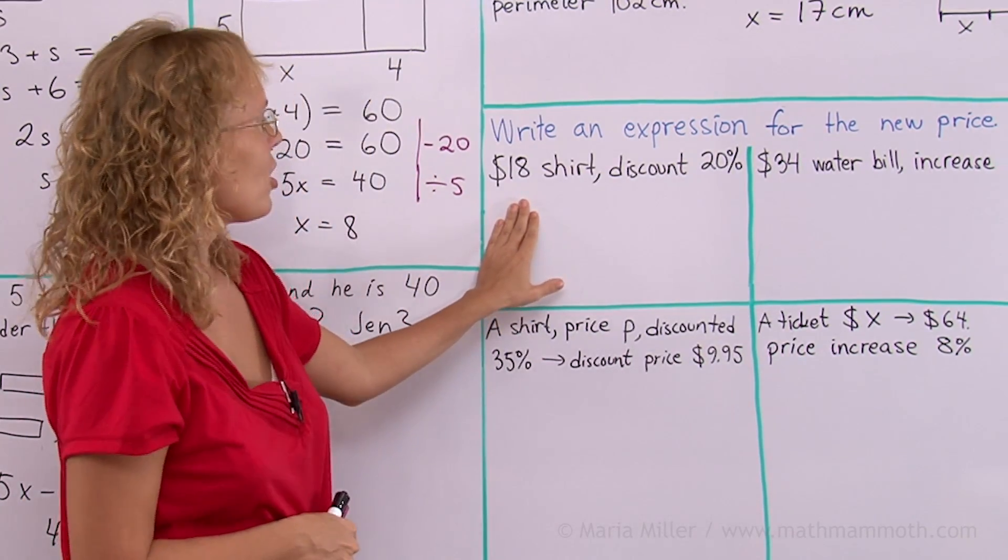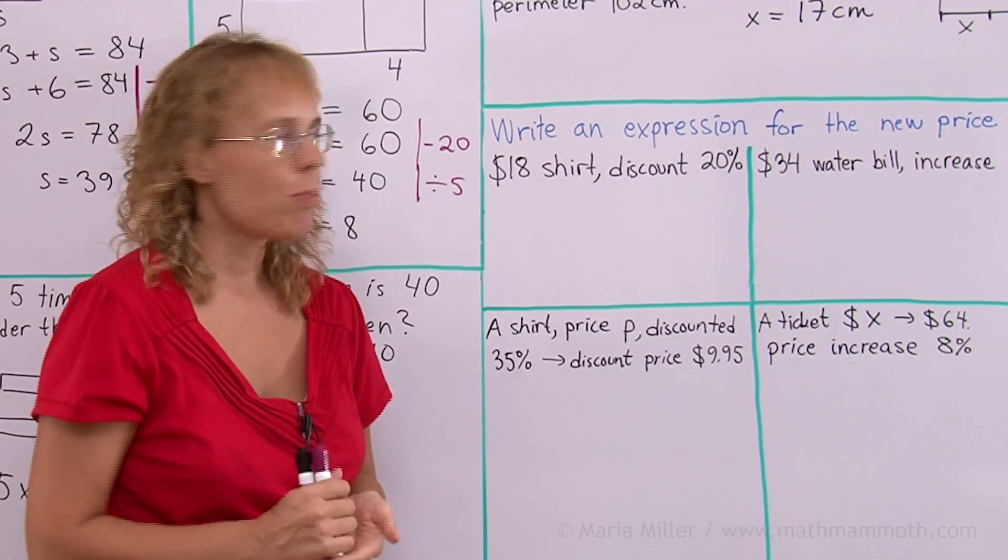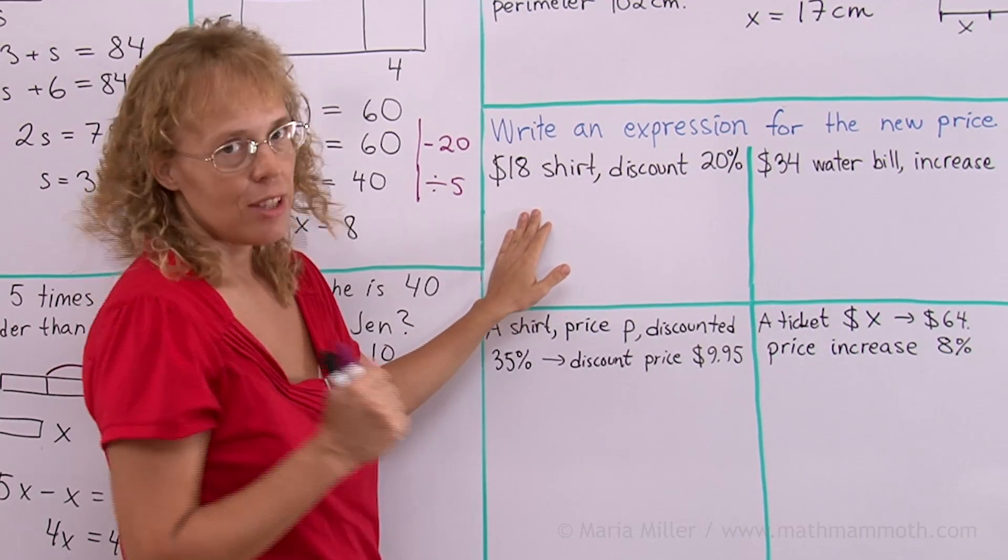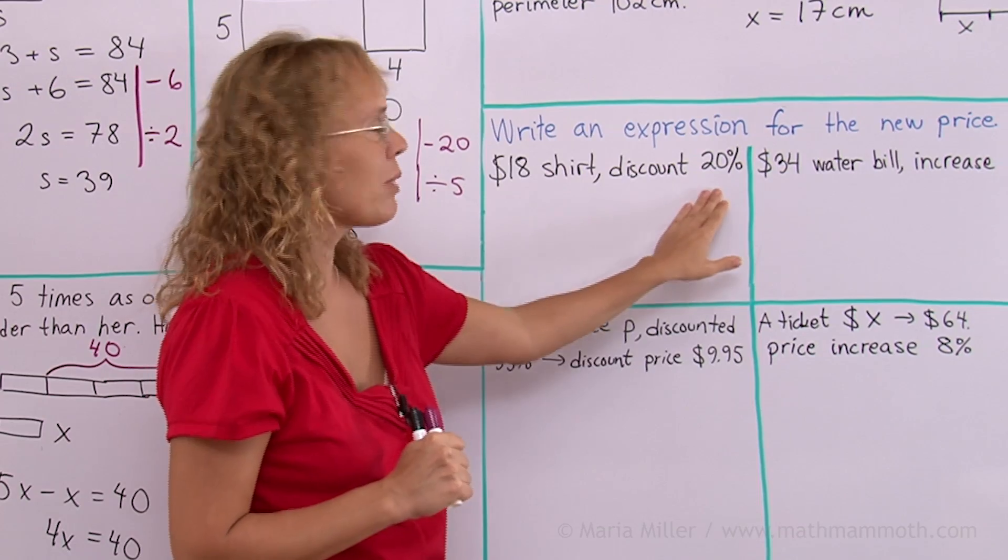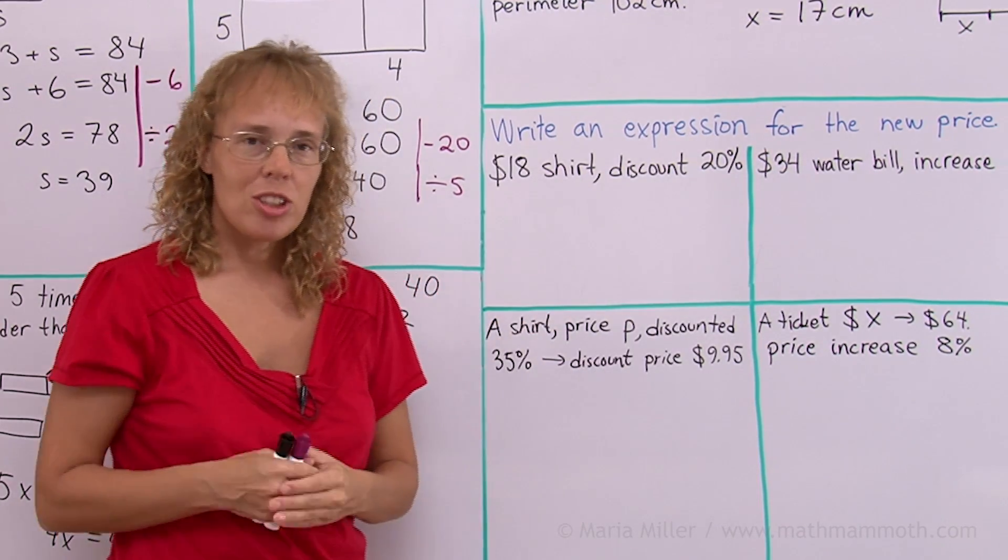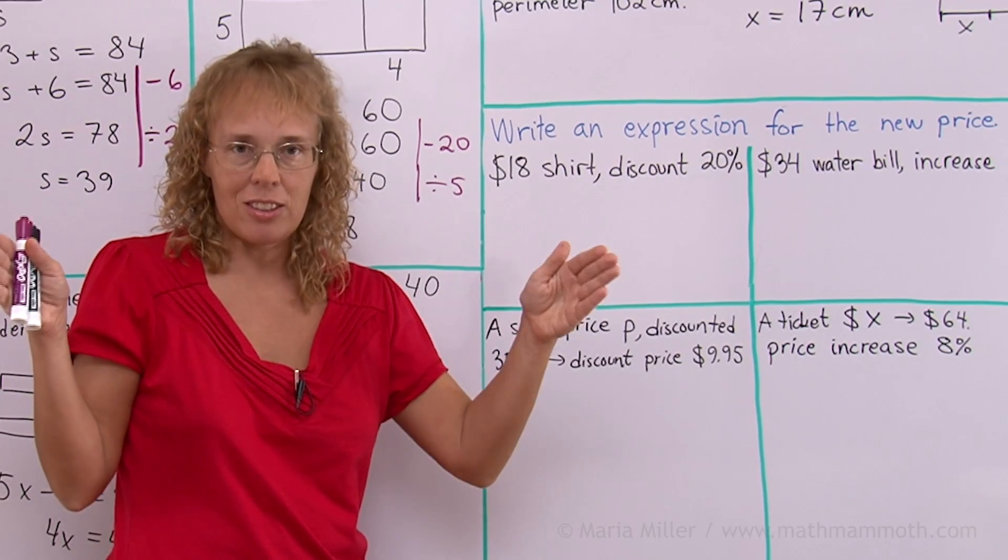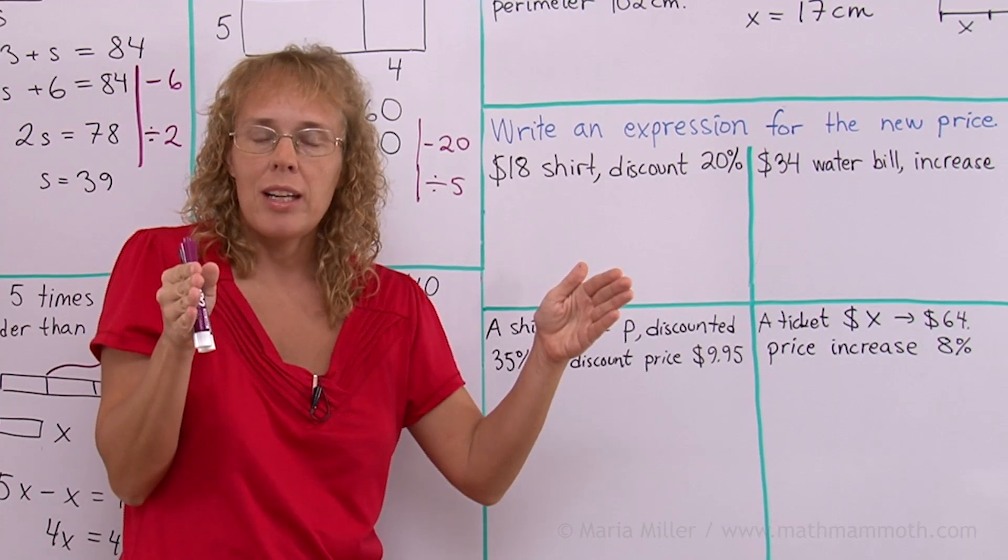Let's say we have an $18 shirt and it is discounted by 20%. Write an expression for the new price and you don't have to calculate the new price. The original price is $18, the discount is 20%. I often like to think of it this way that the original price here, the $18, is also 100% of the price.